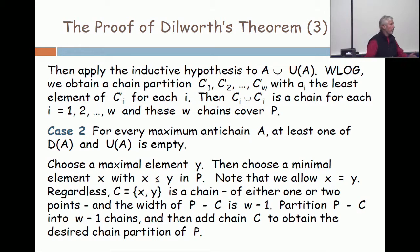All right, now case two is the complement of case one. Whenever you take a maximum anti-chain, at least one of down from A and up from A is empty.